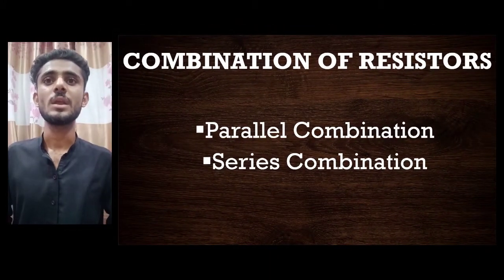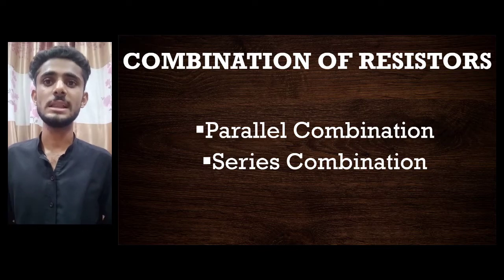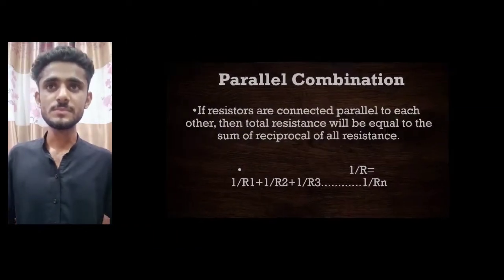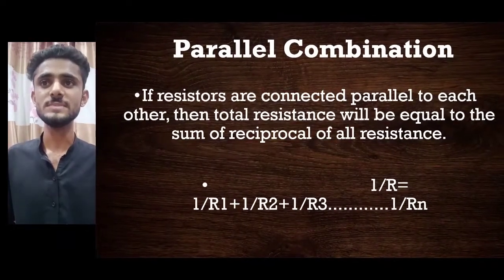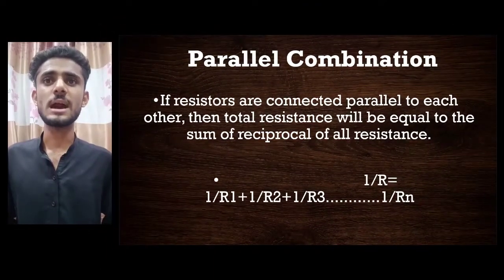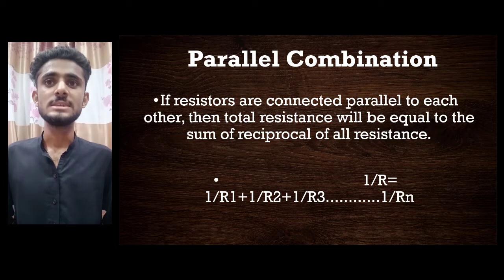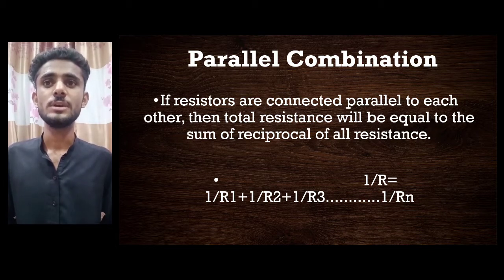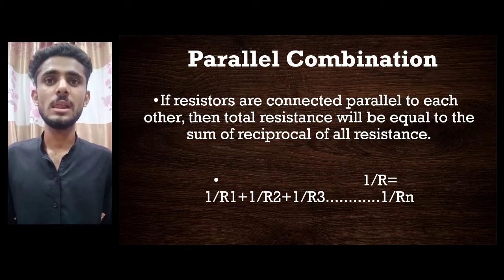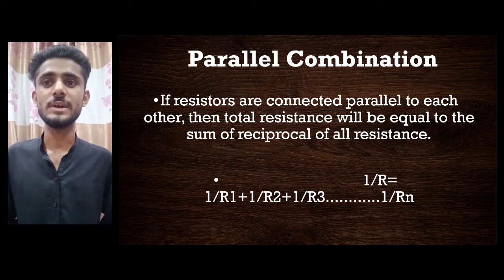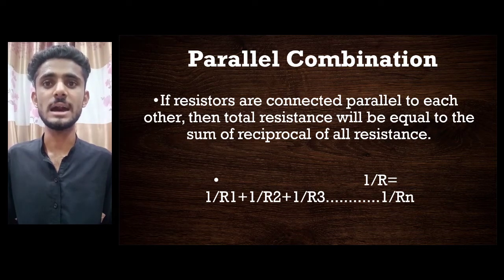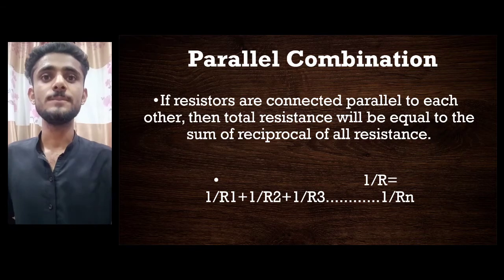Combination of resistors. Parallel combination: if resistors are connected in parallel, the total resistance is equal to the sum of the reciprocals of each resistance. 1/R = 1/R1 + 1/R2 + 1/R3 + ... + 1/Rn.